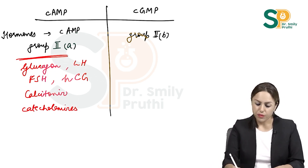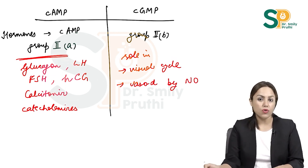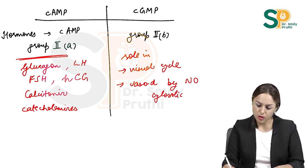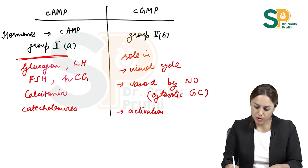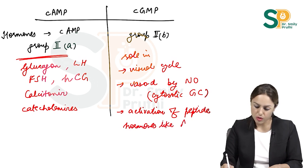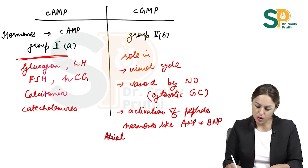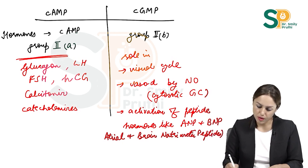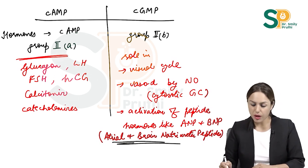Cyclic GMP has a role in the visual cycle. It also has a role in the vasodilatory effect by nitric oxide, where cytosolic guanylate cyclase is used. Additionally, it is involved in the activation of peptide hormones like ANP (Atrial Natriuretic Peptide) and BNP (Brain Natriuretic Peptide), where the membrane-bound guanylate cyclase form is used.